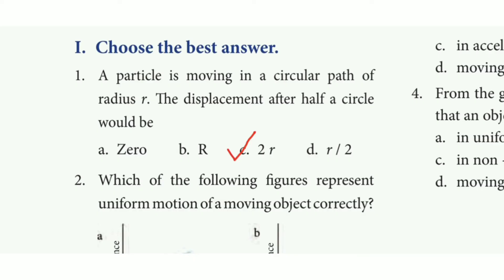Question 1: A particle is moving in a circular path of radius R. The displacement after half a circle would be? The answer is option C: 2R.